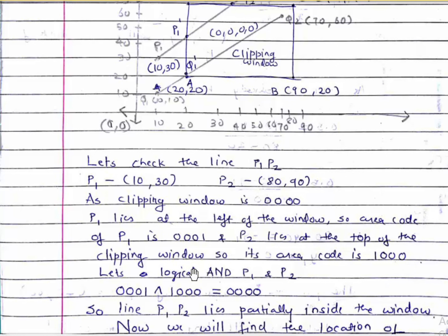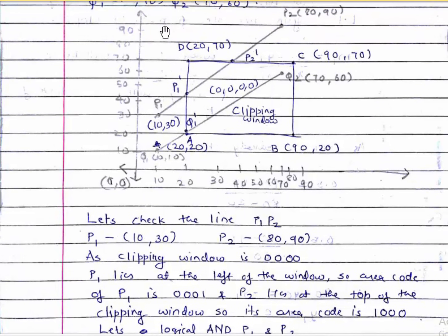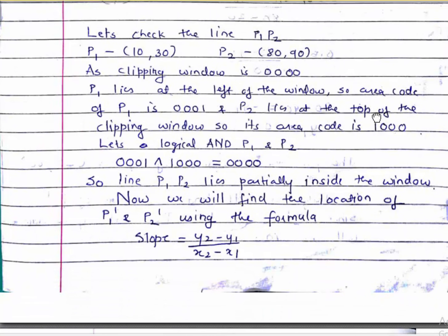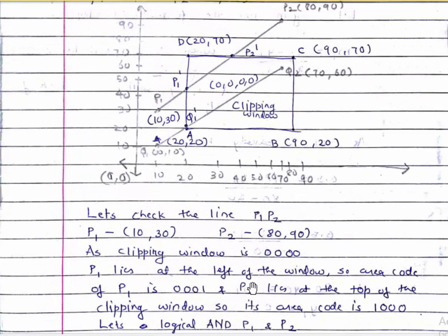Now let's perform the logical AND operation on P1 and P2: 0001 AND 1000 gives us 0000. It is confirmed that line P1P2 lies partially inside the clipping window. Since it lies partially inside, we have to use the slope formula to find the positions of P1' and P2' — the clipped endpoints that remain inside the window after clipping.